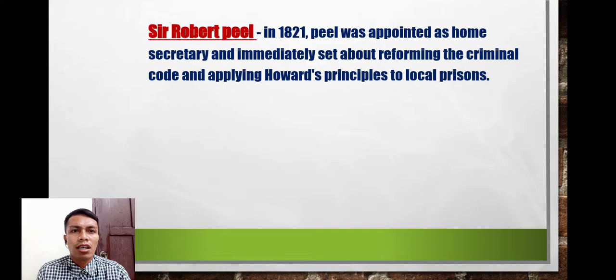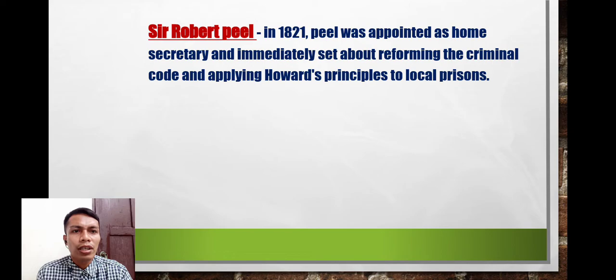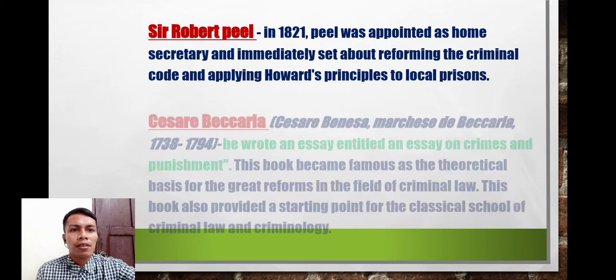Robert Peel, in 1821, was appointed as Home Secretary and immediately set about reforming the criminal code and applying Howard's principles to local prisons.